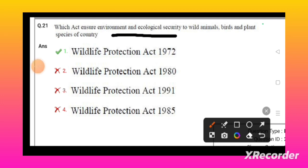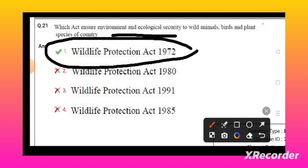Which act ensures environment and ecological security to wild animals, birds, and plant species of the country? The Wildlife Protection Act 1972 ensures environment and ecological security to wild animals, birds, and plants.